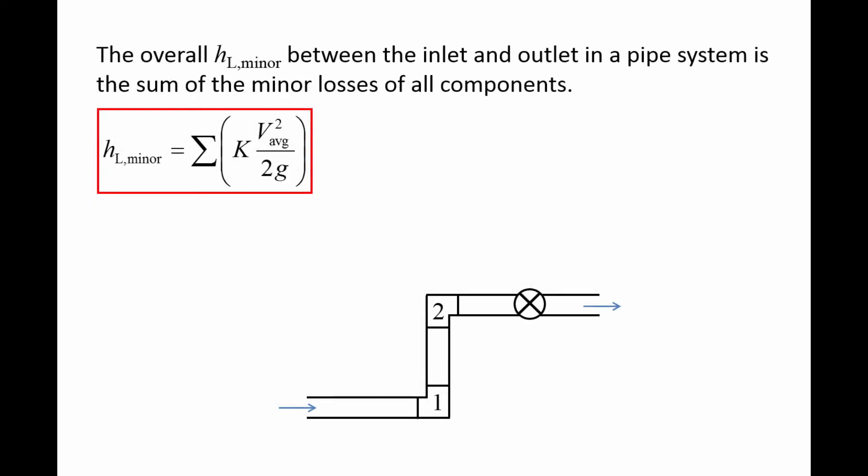Most pipe systems will have multiple components. When calculating the total minor losses for a pipe system, you need to add the contributions from all of the individual components.